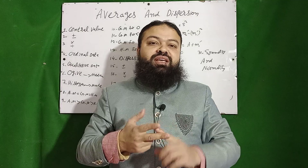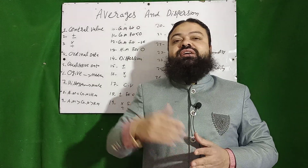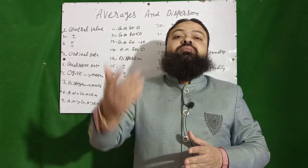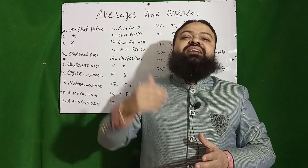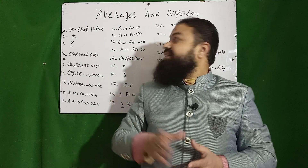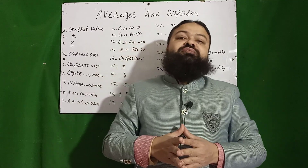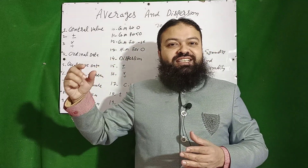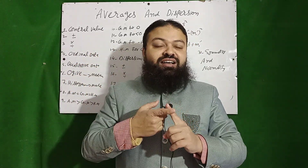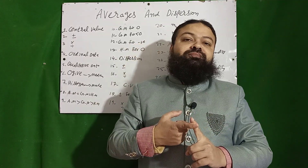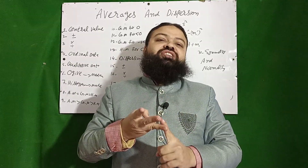If I add seven to every value of the data set, then the mean will be changed, geometric mean will be changed, median will also be changed, and mode will be changed. Similarly, if I multiply a constant value — let's suppose two — with every value of the data set, then all five averages are changed. They are not independent of change of scale; they are affected by and dependent upon change of scale.